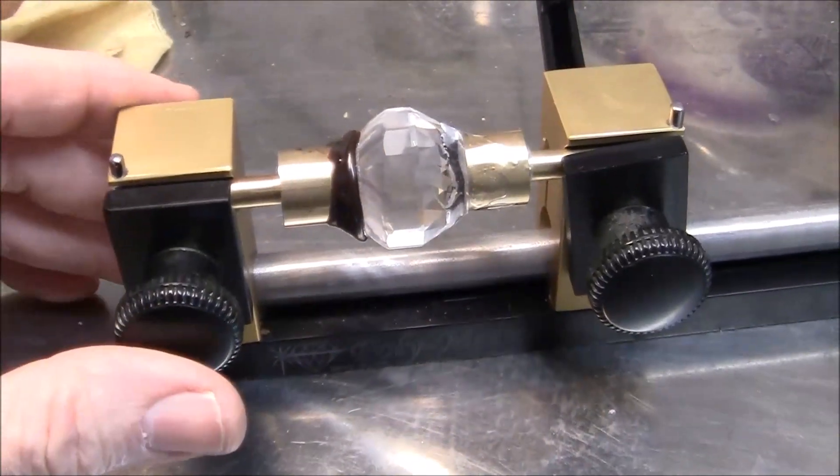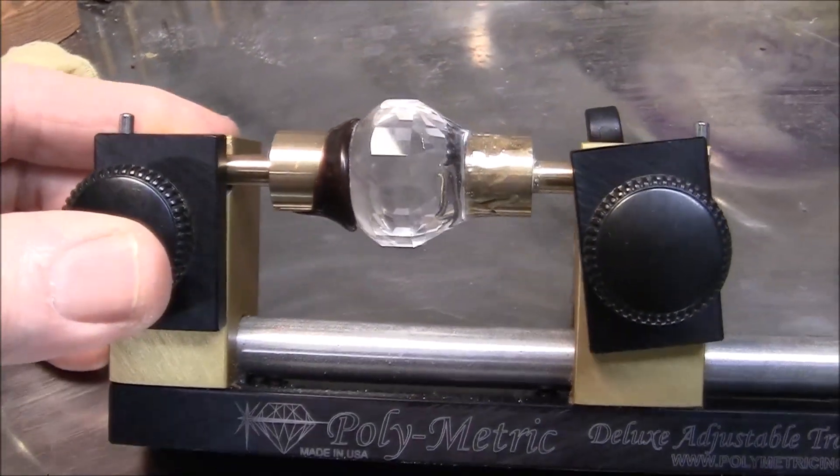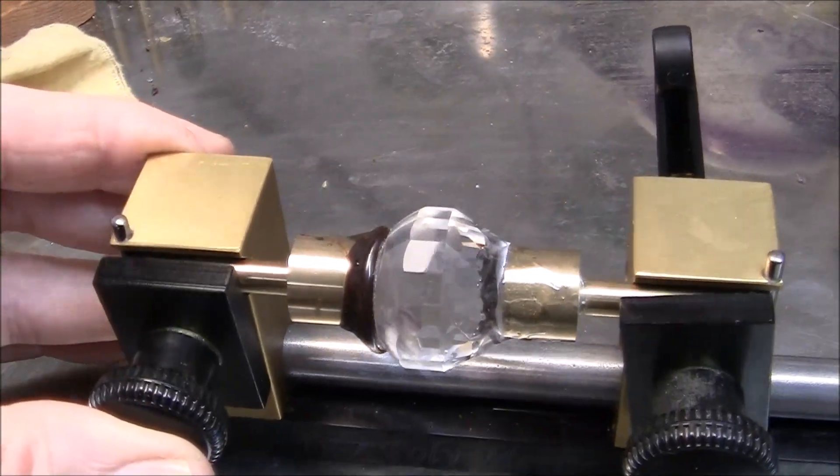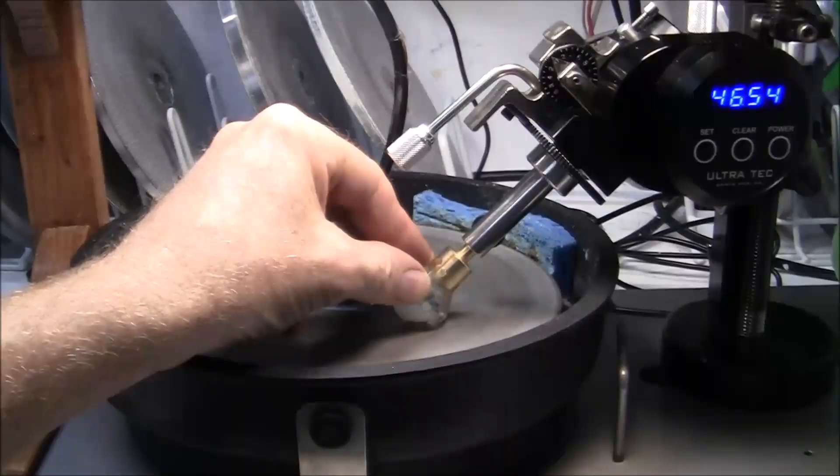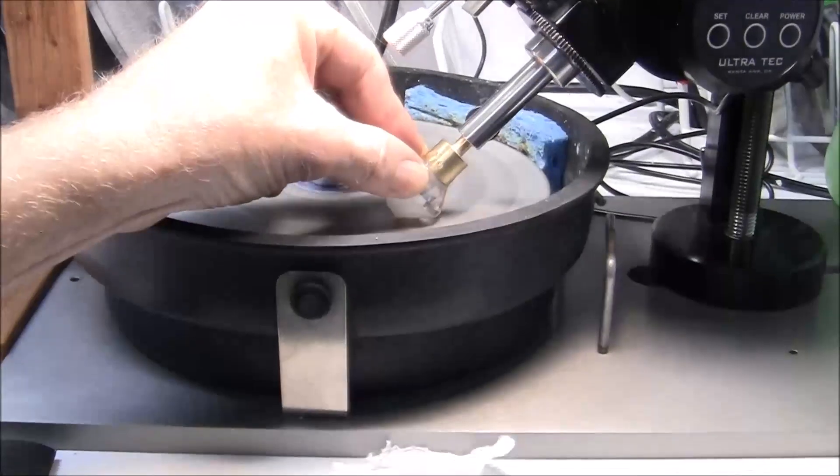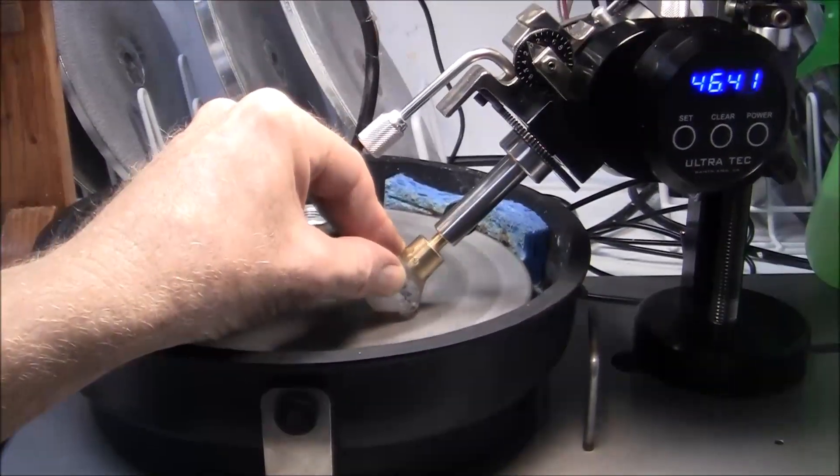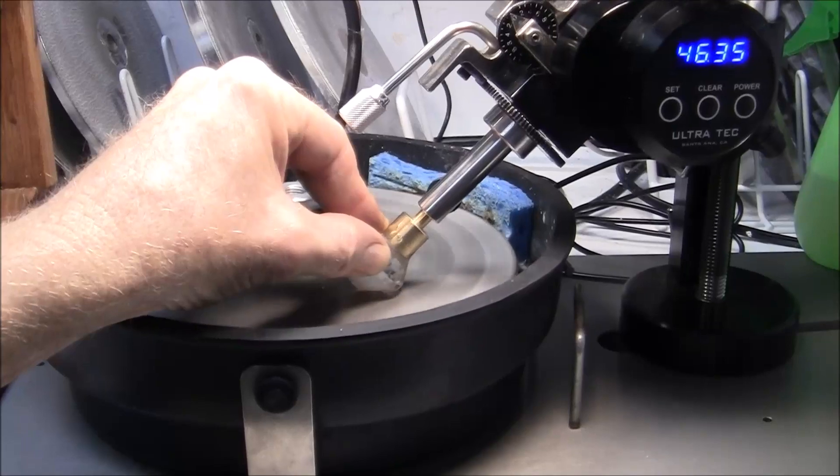Here, I've transferred the gemstone to a second dop stick. I used epoxy for this second transfer. This is where I glued it on. I've separated the first dop stick that I used. And I've started cutting what we call the crown, the upper half of the gemstone.